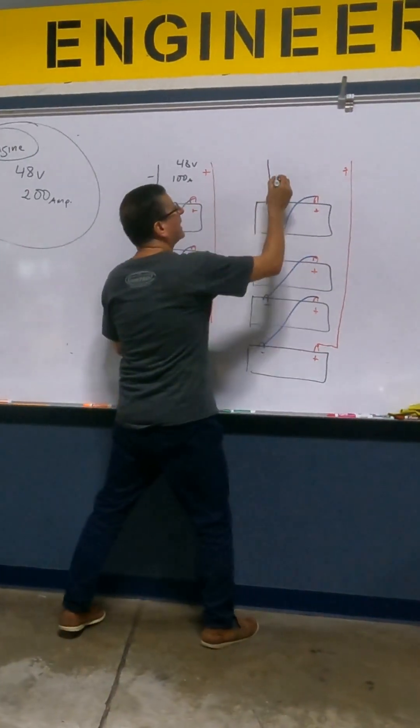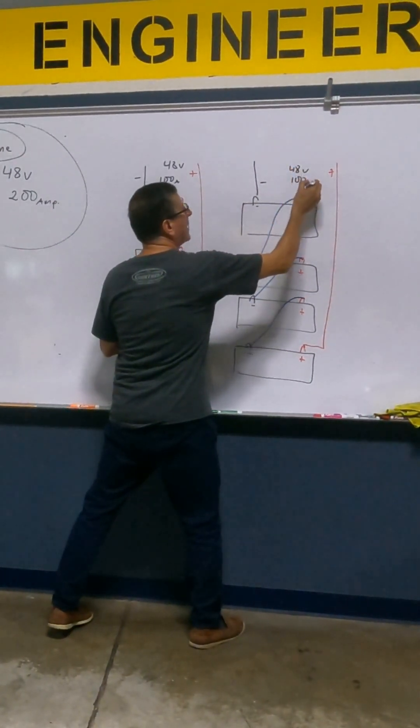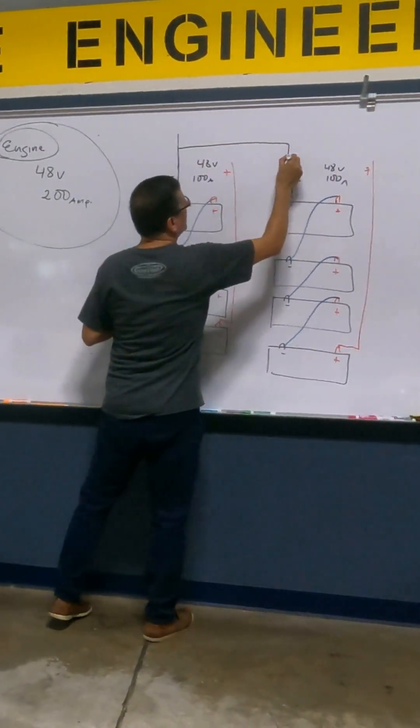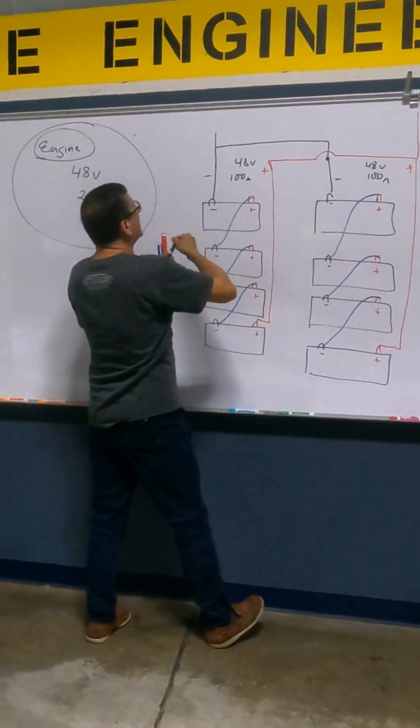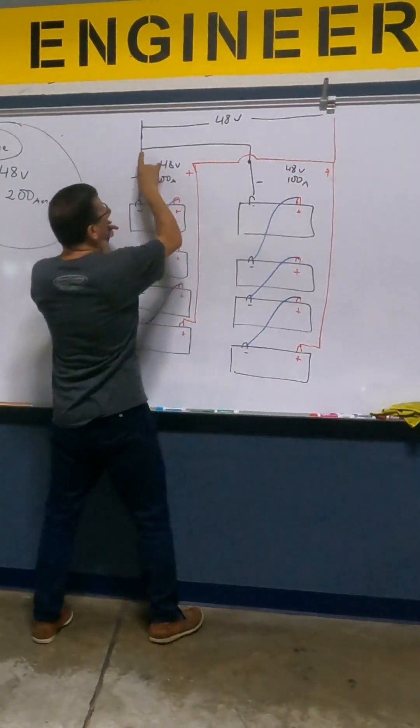How much do I have here? 48 volts, 100 amps. But I can connect this with this together, and this with this together. Between this and this I have 48 volts because it's in parallel—negative with negative and positive with positive—and 200 amps.